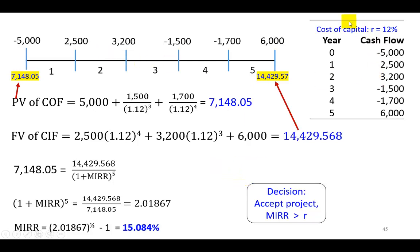So we have this project right here with these projected cash flows. The project costs $5,000, so it's a negative cash flow. We're expecting to earn $2,500 in the first year, $3,200 in the second. We're expecting an operating loss of $1,500 in the third year, as well as another operating loss of $1,700 in the fourth year. And then to make some good change, $6,000 in the fifth and final year. So now what we're going to do is to pull out these negative cash flows and find their present value. It should turn out to be $7,148.05.